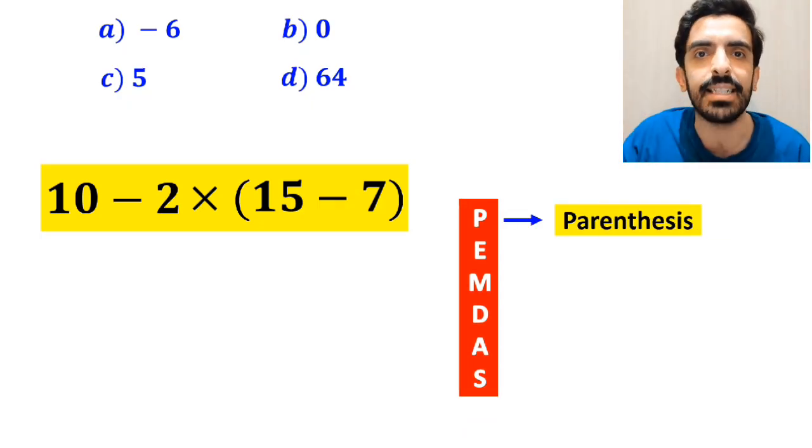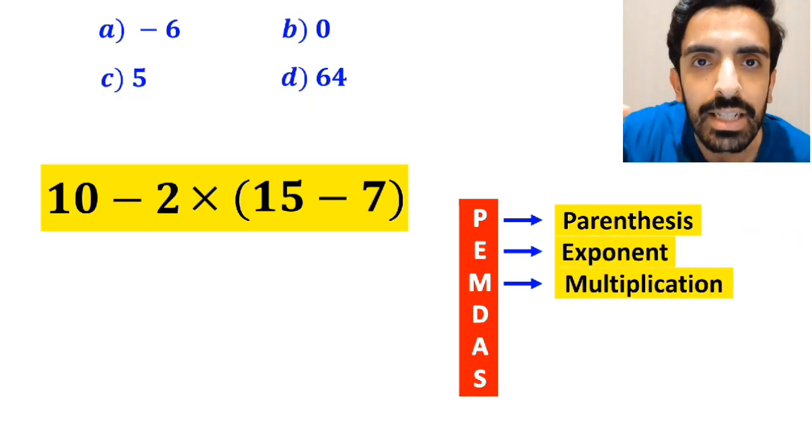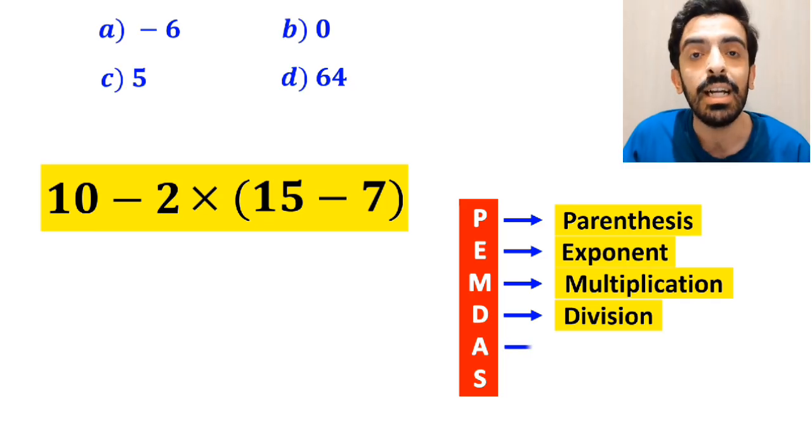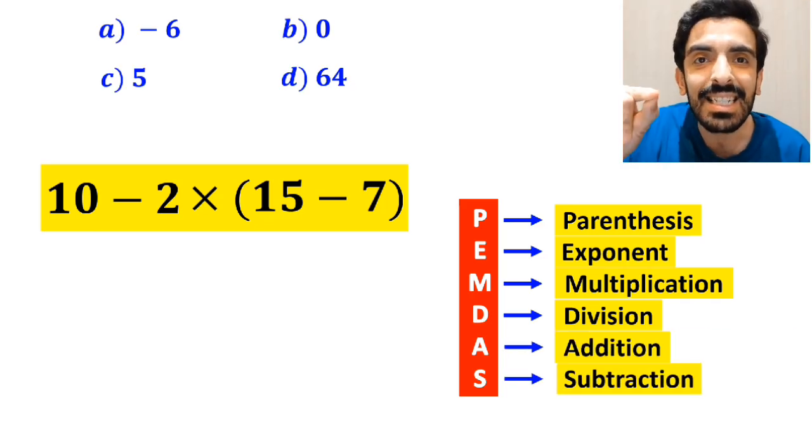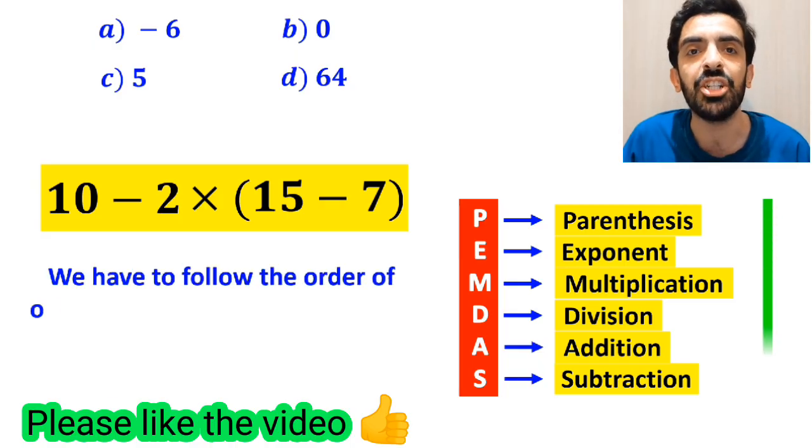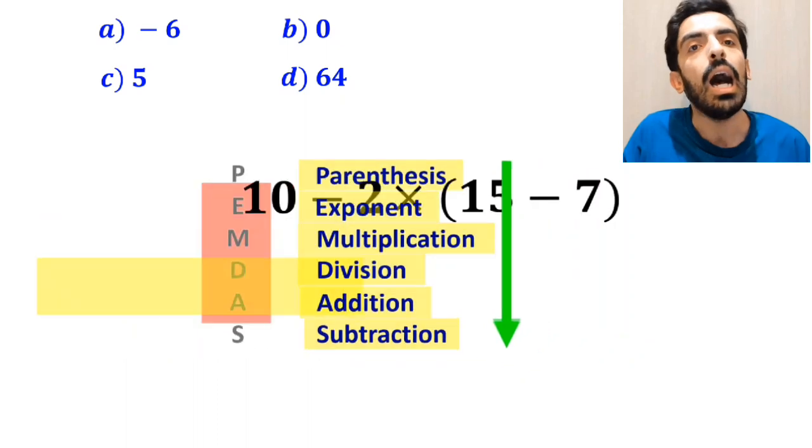P stands for parenthesis, E stands for exponent, M stands for multiplication, D stands for division, A stands for addition, and S stands for subtraction. We have to follow the order of operations I told you, step by step from top to bottom.